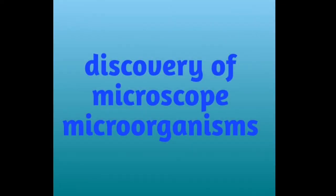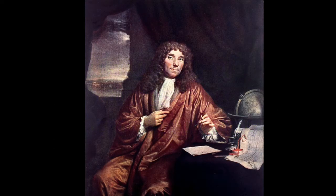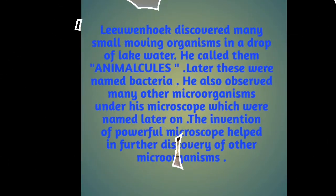Discovery of Microscope and Microorganisms. Anthony van Leeuwenhoek, who was a cloth merchant from Netherlands, built a single lens microscope which could magnify objects about 300 times. His curiosity and skill in making powerful lenses was the secret of his invention. Leeuwenhoek discovered many small moving organisms in a drop of lake water and called them animalcules. Later these were named bacteria.